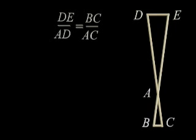Do we have enough information to calculate the size of the sun? Here is the formula. DE over AD equals BC over AC. DE is the size of the sun. We don't know that. That's what we're trying to figure out.